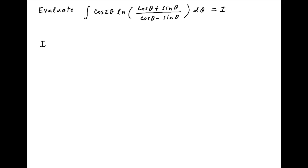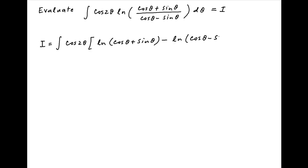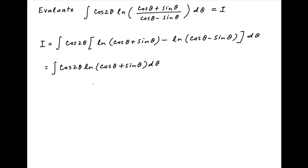Let's denote the given integral by I. Using properties of logarithms, I can be rewritten as the integral of cos 2θ times ln(cos θ + sin θ) minus ln(cos θ − sin θ) dθ. I can therefore be broken into two components: the first is the integral of cos 2θ times ln(cos θ + sin θ) dθ, and the second is minus the integral of cos 2θ times ln(cos θ − sin θ) dθ.